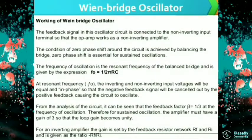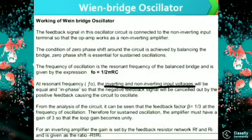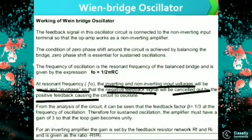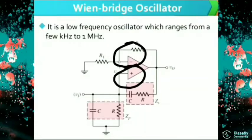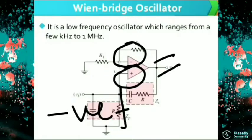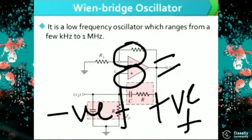At the resonant frequency F0, the inverting and the non-inverting input voltages will be equal and in phase, so that the negative feedback signal will be cancelled out by the positive feedback signal, causing the circuit to oscillate.